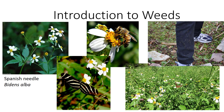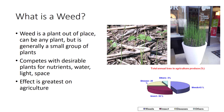I'm Dr. DeBusk, and in this video I'm going to discuss weed identification including types, life cycles, reproduction, and dispersal. Weeds are unwanted and undesirable plants which interfere with the utilization of land and water resources and thus adversely affect human welfare. They can also be referred to as plants out of place.